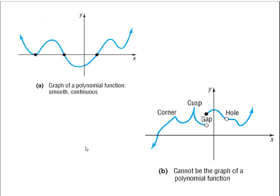Polynomial graphs are smooth and continuous. Smooth means there are no sharp edges or corners — what we call cusps. Continuous means you never have to pick up your pencil while drawing the graph. Polynomials do not have breaks, holes, or sharp corners; they always look smooth and continuous.